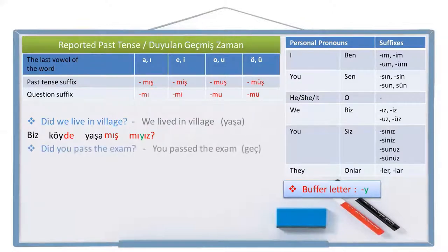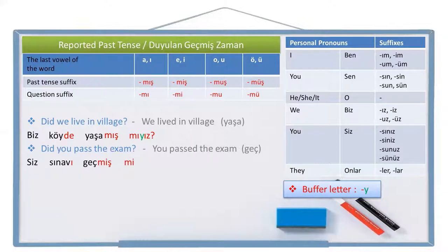Did you pass the exam? This is the plural 'you' question sentence. Let's write the positive sentence. You is 'siz', exam is 'sınav', the exam is 'sınavı', pass is 'geç', past is 'geçmiş'. Leave a space and write the question suffix 'mi' and the person pronoun suffix 'siniz' to the end. Siz sınavı geçmiş misiniz? Did you pass the exam?